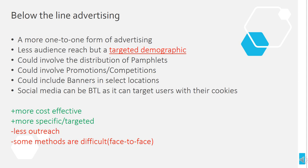Below the line advertising is basically the opposite — instead of trying to reach a mainstream audience, you're looking to reach more of a niche audience. You have a specific demographic in mind — you know the type of person that you want to buy or come to see this product. You try to use a more one-to-one form of advertising, usually with a lot less money, being more specific about who you want to see it.